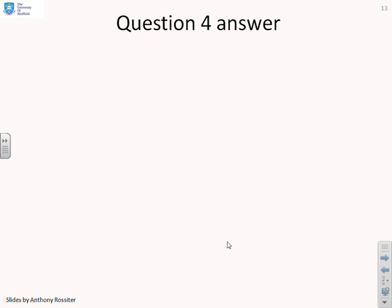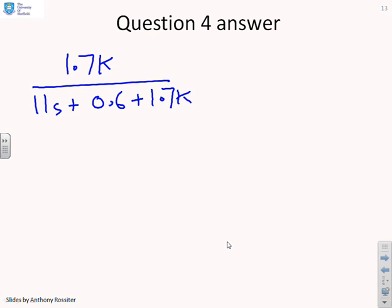So let's look at the answer then. So if I put this into closed loop with an arbitrary k, I'm going to get the closed loop transfer function is 1.7k over 11s plus 0.6 plus 1.7k. So where, therefore, is the pole? Well, the pole is going to be at minus 0.6 plus 1.7k divided by 11. So hopefully that was relatively straightforward.